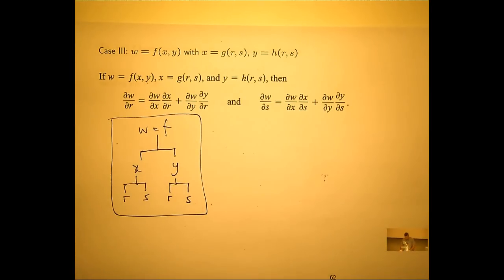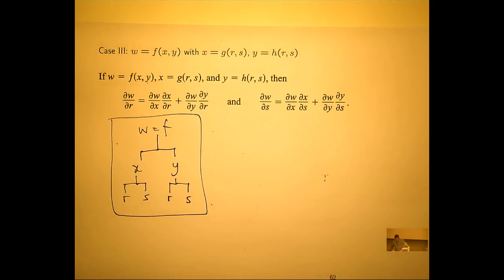All you've got to do, say, to find dw/dr, find all the paths that lead to an r. When you go from letter to letter, form a derivative. That's all it is.